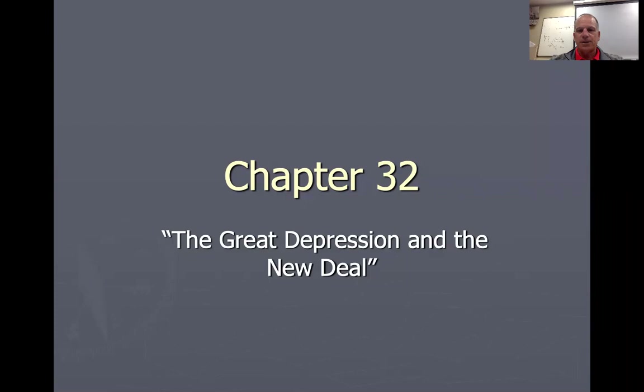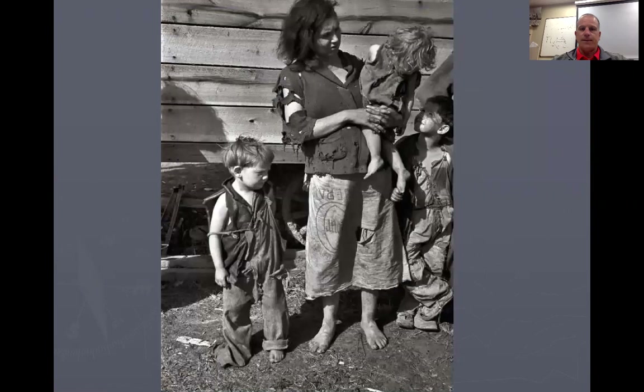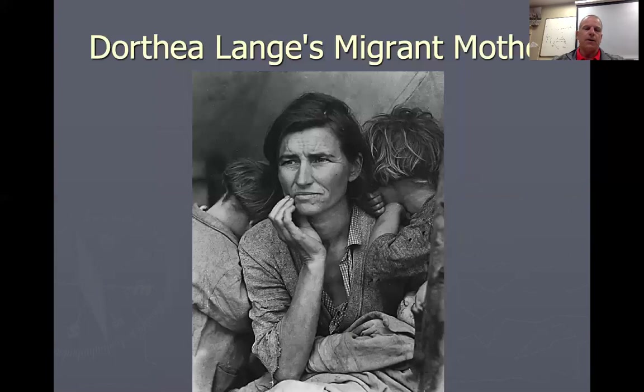The title of Chapter 32 is The Great Depression and the New Deal. I'm going to start out this chapter by showing you some pictures of what life was like in the 1930s, early to mid-30s during the Great Depression. You had people living in lean-tos, people just dirt poor. This woman has a potato sack that she's wearing as a dress — tough situation.